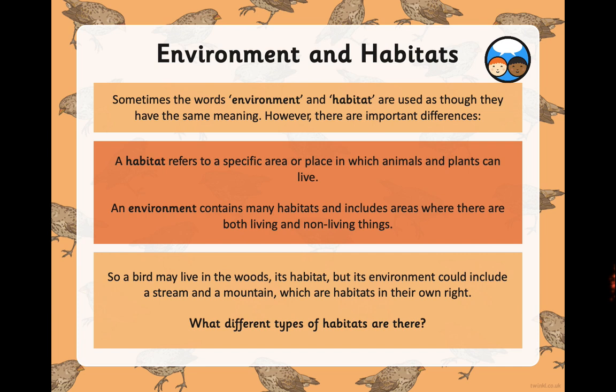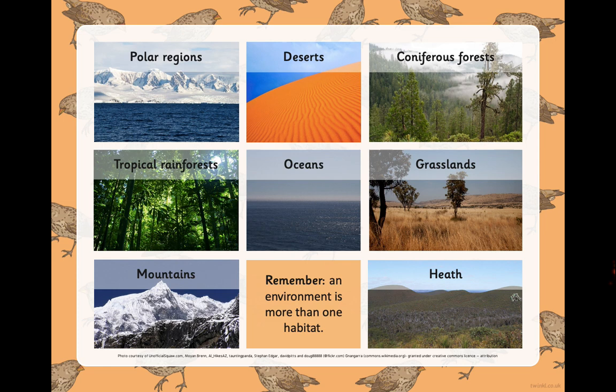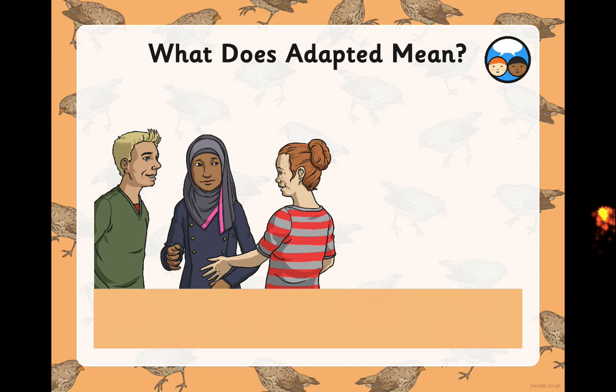A bird may live in the woods — its habitat — but its environment could include a stream and a mountain, which are habitats in their own right, and there will be animals that live in those particular habitats that are also part of that environment. What different types of habitats are there? This is something you would have done in Year 2 and Year 3. There's an excellent song on Hopscotch on our YouTube channel — check it out. We've got polar regions, deserts, coniferous forests, tropical rainforests, oceans, grasslands, mountains, and a heath. Remember: an environment is more than one habitat.